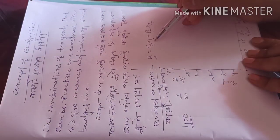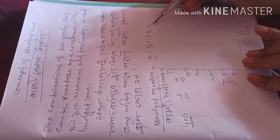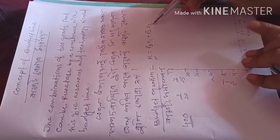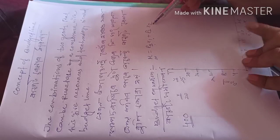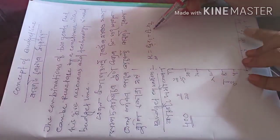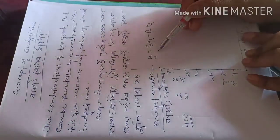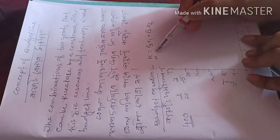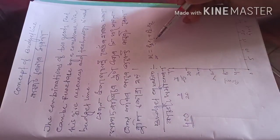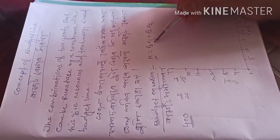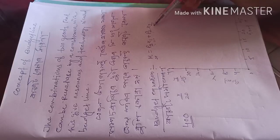There are two commodities here — X1 and X2. If we multiply the quantity with the price of each commodity and sum both, then we will get the total budget — the total amount we spend for purchasing these two commodities X and Y.